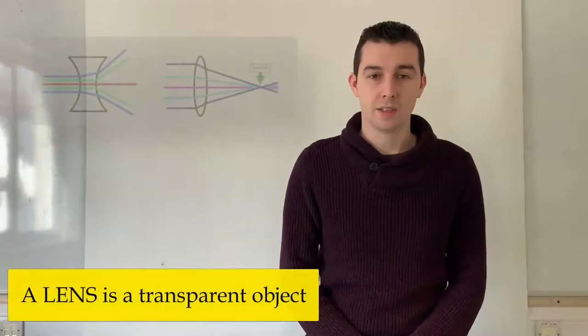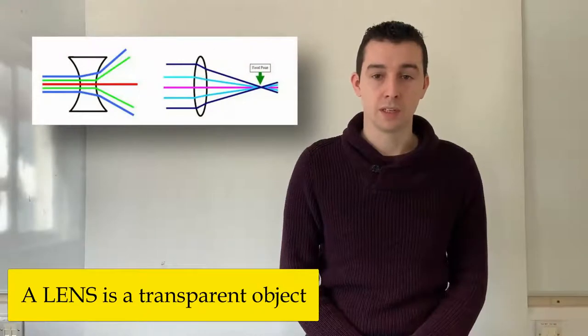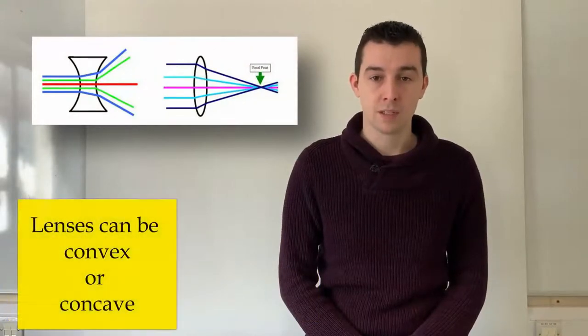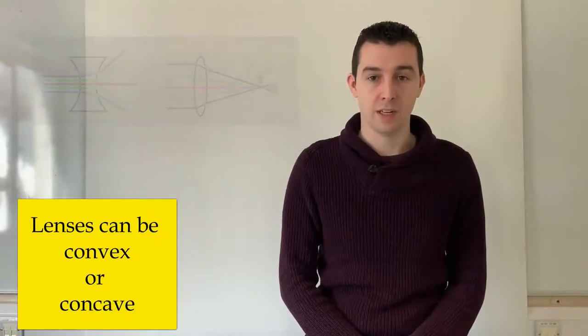A lens is a transparent object which is bounded by two optical planes so that the thickness of its middle and edge are different. Lenses can occur in two different forms, namely a convex and a concave lens.